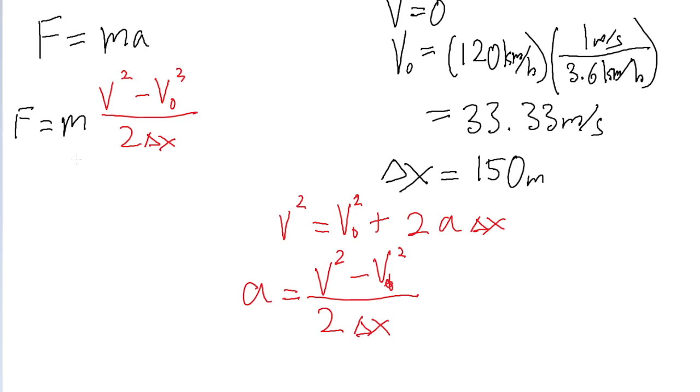So all that's left is to start plugging this into a calculator. So the mass is given as 3.6 multiplied by 10 to the power of 5 kilograms, and this is being multiplied by, and then the initial speed is 0, minus the, or the final speed is 0, but minus the square of the initial speed of 33.33 meters per second. This is squared, and this is divided by 2 times the distance traveled, which is 150 meters.